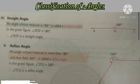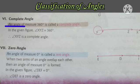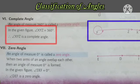Now next, complete angle. An angle of measure 360 degrees is called a complete angle. You can see the angle XYZ is 360 degrees. So this is a complete angle.